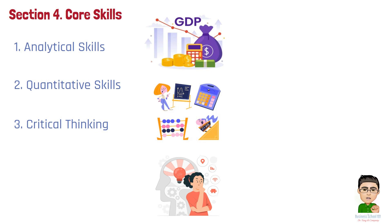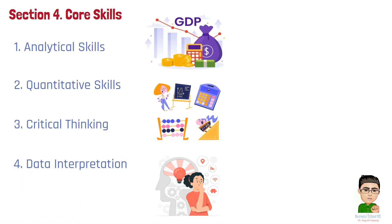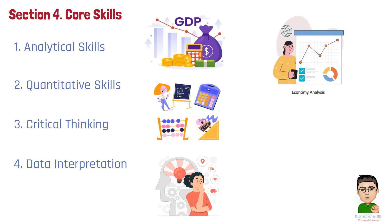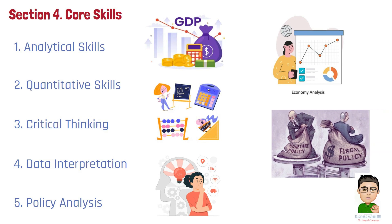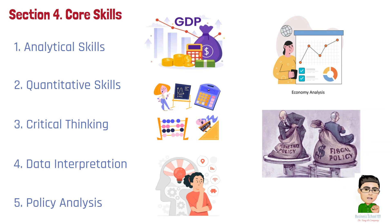Number 4: Data Interpretation. Being able to interpret economic data, such as GDP growth rates and unemployment statistics, is vital for understanding economic conditions and making informed decisions. Number 5: Policy Analysis. Understanding the implications of various fiscal and monetary policies helps in evaluating their potential effects on economic stability and growth, guiding both personal and business decisions.